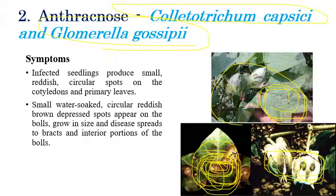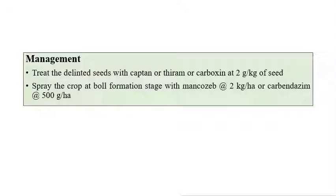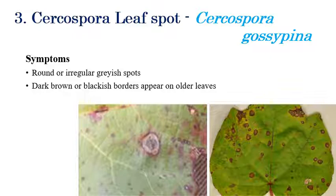Boll size, bract size, and internodes are also reduced. The major symptoms are reddish-brown discoloration on leaves, and occasionally the same symptoms can be seen on bolls. Coming to management: acid delinting of seeds, along with captan, thiram, or carboxin at the rate of 2 grams per kilogram of seed. Soil drenching during boll formation stage with mancozeb at 2 kg per hectare or carbendazim at 500 grams per hectare can be recommended.